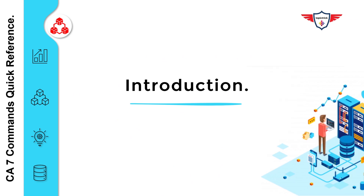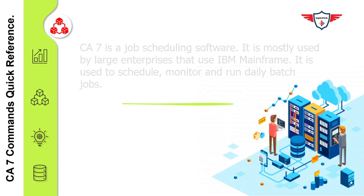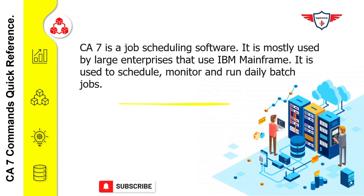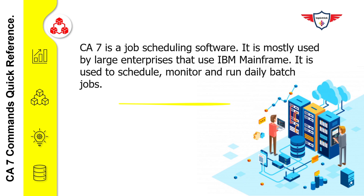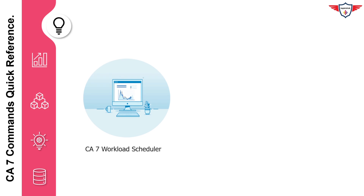CA7 is a job scheduling software. It is mostly used by large enterprises that use IBM mainframe as a computing platform. CA7 is generally used to schedule, monitor and run daily batch jobs as per a predefined plan. CA7 has the concept of a queue, and each job has to go through these queues one by one before it is actually submitted for execution.